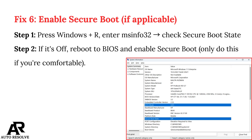Fix 6: Enable Secure Boot, if applicable. Step 1: Press Windows+R and enter 'msinfo32.' Check the Secure Boot State. Step 2: If it's off, reboot to BIOS and enable Secure Boot.